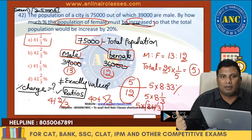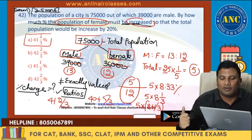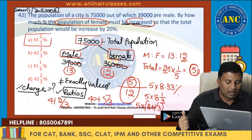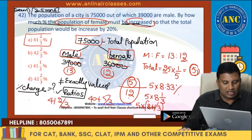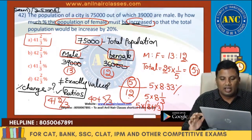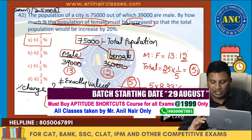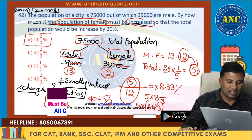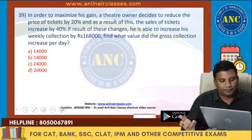There is an increase in total population by 20 percent because the number of females increased. How much is the increase? 5 out of 12. 5/12 = 5 × 8.33 = 41⅔. Out of 12, 5 must be increased — answer is 41⅔. Very easy question; you can avoid exact values.